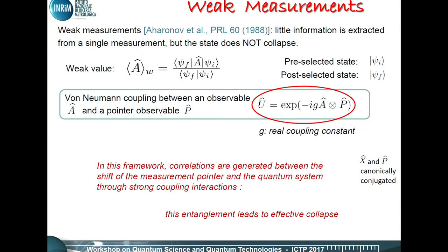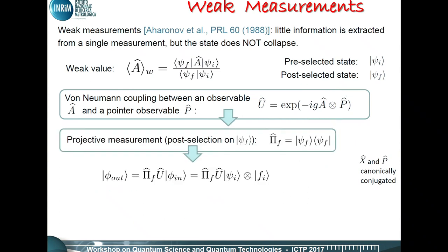Typically in a weak measurement approach, we exploit the common von Neumann coupling between an observable A and a pointer observable — let's say the momentum of the needle of the measurement apparatus. The unitary operation is this, where G represents a real coupling constant, and A and P are the two observables. The correlations are generated between the shift of the pointer and the quantum system. After that, we post-select strongly on the final state, and the overall state at the output takes this form.